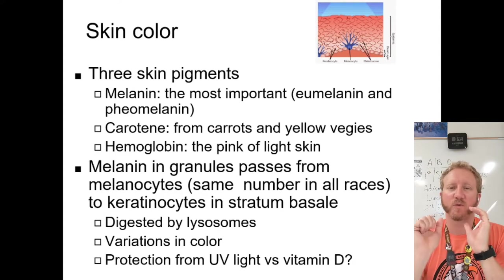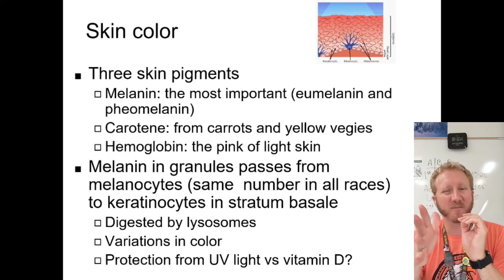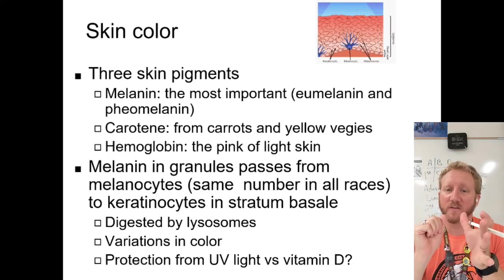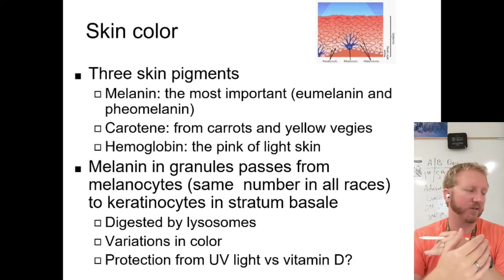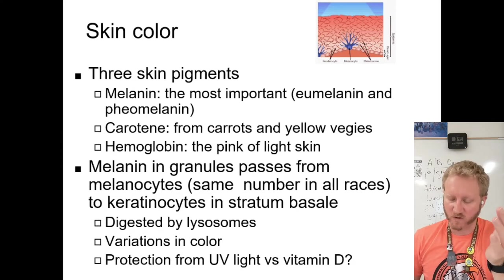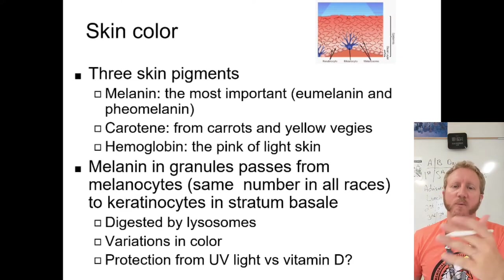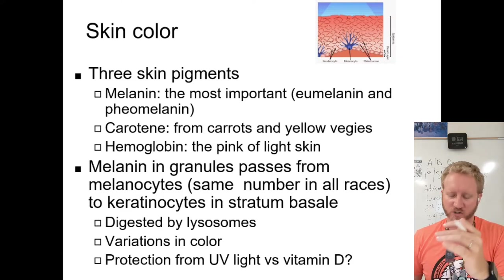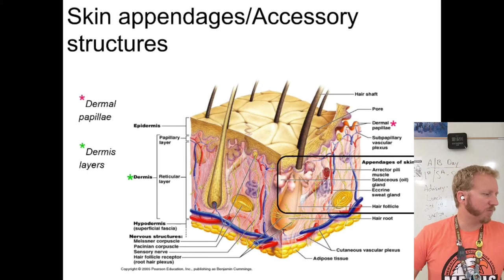You can't really be optimal at both UV protection and vitamin D production. If you're very efficient at one, you have to offset the deficit of the other. Very good vitamin D production means greater skin cancer risk due to less UV protection, and vice versa. We'll explore this relationship in the lab.